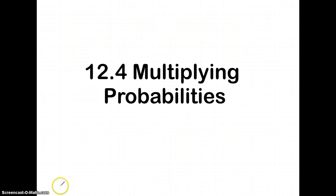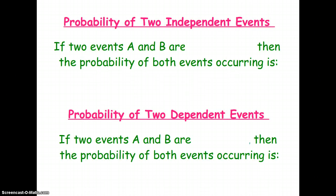This is the video for 12.4, Multiplying Probabilities. We're first going to look at the probability of two independent events. If you remember, independent means these two events' probabilities are not affected by each other — they're completely independent of each other.